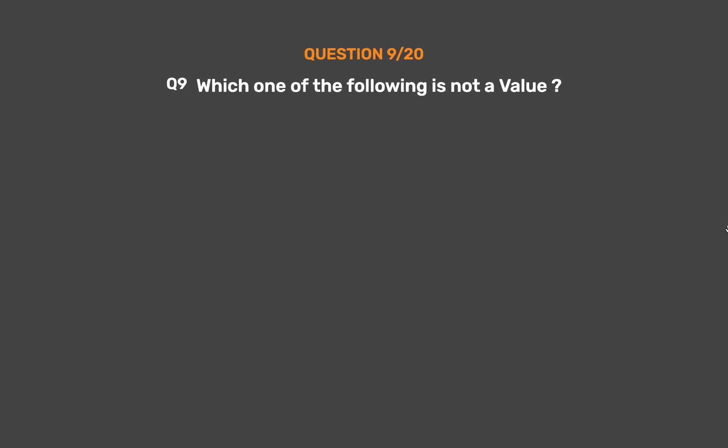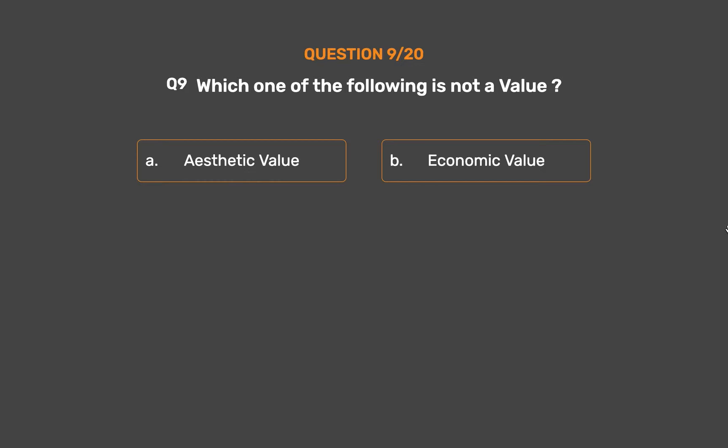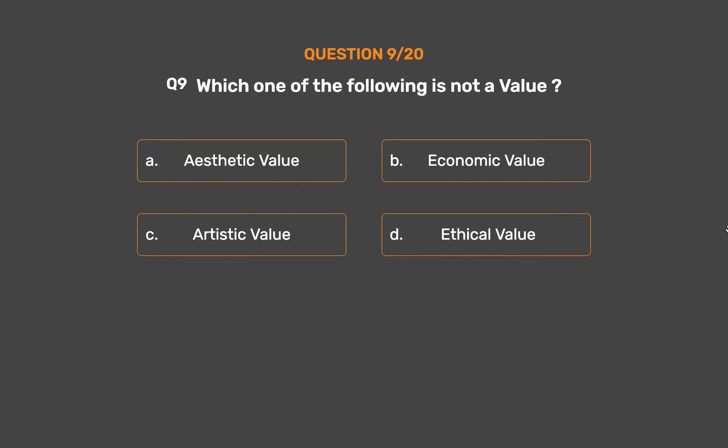Question number 9. Which one of the following is not a value? Option A: Aesthetic value. Option B: Economic value. Option C: Artistic value. Option D: Ethical value.